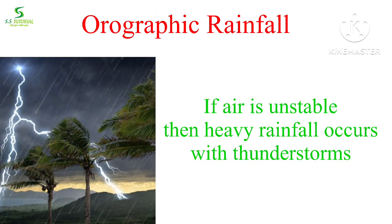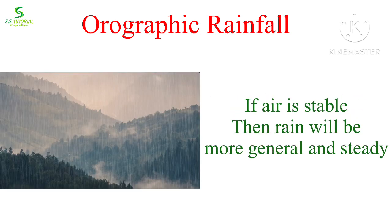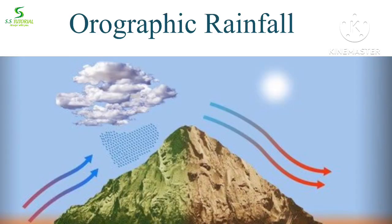If the air is unstable, then heavy rainfall occurs with thunderstorm. But if the air is stable, then rainfall will be more general and steady. This type of rainfall is known as orographic rainfall.